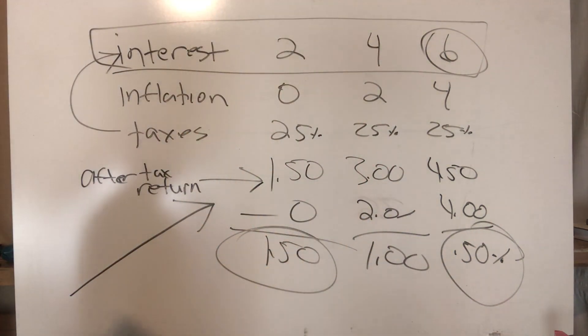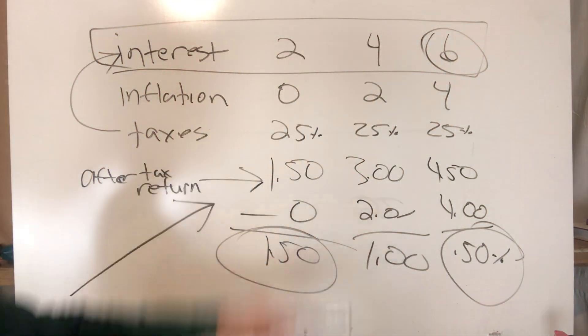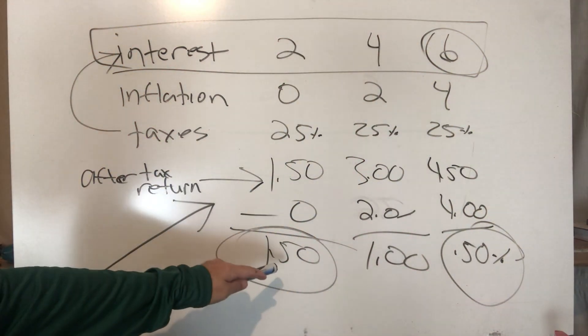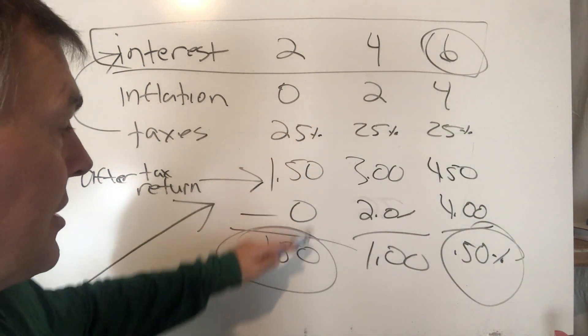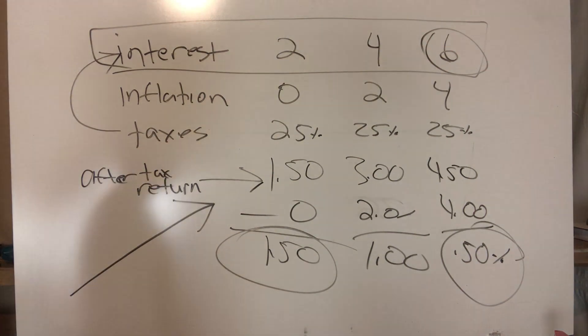Look at that. You think this is three times the rate of return of that, and yet net of inflation and taxes, this is three times the net rate of return of that. Isn't that crazy? You got 6% interest in this scenario—three times—and yet net of taxes and inflation, you're getting three times the rate of return on the one that is three times less in interest.